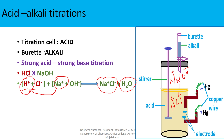On further addition of alkali after the equivalence point, the conductance gradually rises due to the introduction of fast-moving OH- ions. After the complete reaction between HCl and NaOH, the remaining NaOH provides Na+ ions and OH- ions. The OH- ion is highly mobile and fast-moving, so the conductance increases again.